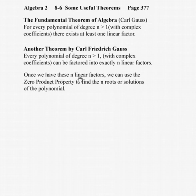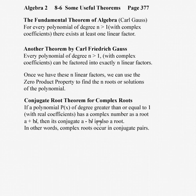To expand on that, once you've found the factors, we can use the zero product property to turn those factors into finding roots. So if we have x squared, we're looking for two roots and two linear factors. x to the third means degree 3 — we're looking for three roots and three linear factors.